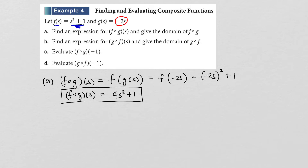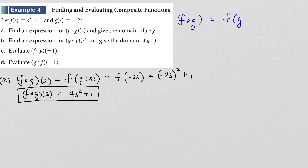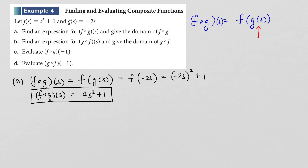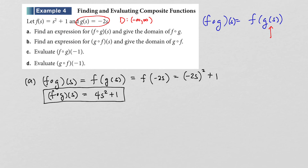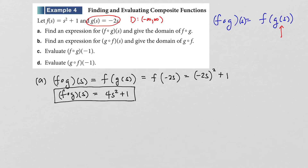What is the domain of f(g(s))? The inside function g has domain all real numbers, since multiplying by -2 has no restrictions. And the result 4s² + 1 has no restrictions either — no square roots or division. So the domain for this composition is all real numbers.